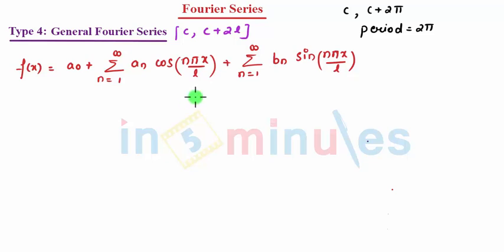Where your value of a0 for this will be... So this we are mentioning for C to C plus 2L. So you can see, with respect to this, your period will be 2L.